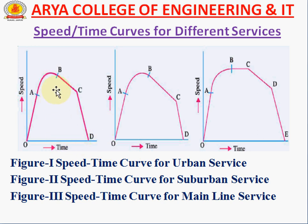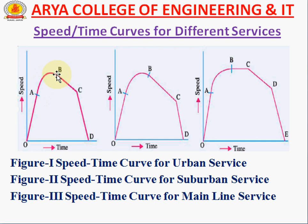Figure 1 represents the speed-time curve for urban service, where the distance between stations is minimum. When the train starts, it undergoes high acceleration from A to B. After reaching point B, the power is cut off, and the train runs by momentum inertia to reach C. Near the station, braking is applied and the train decelerates to a stop. This curve is quite different from the general curve.